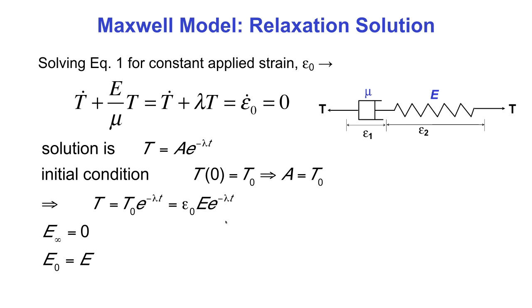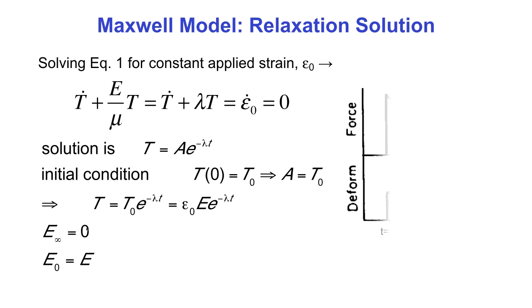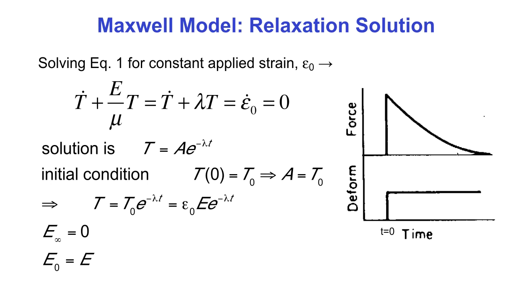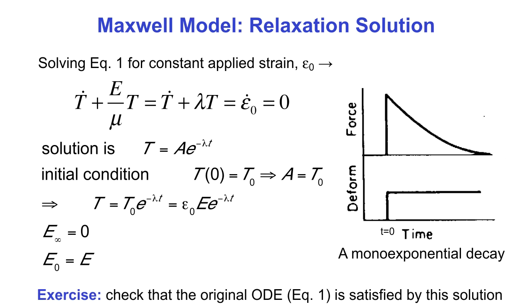Therefore, the stress t equals epsilon naught times e times e to the minus lambda t. At t equals zero, t equals epsilon naught e, so the ratio t to epsilon naught equals e — the instantaneous elastic modulus e naught. At t equals infinity, the stress completely decays to zero, giving an asymptotic elastic modulus of zero. We can plot this mono-exponential decay asymptotically approaching zero. As an exercise, verify that this solution satisfies the original ODE.